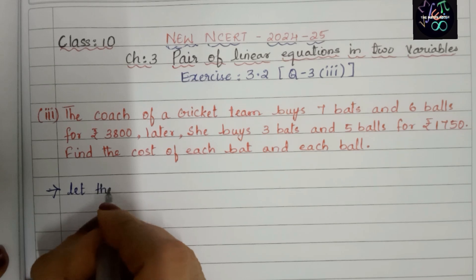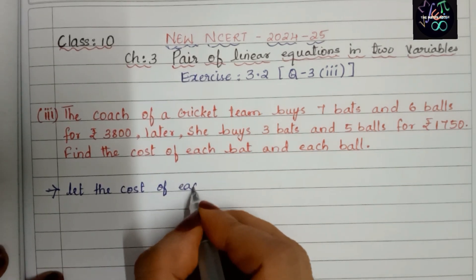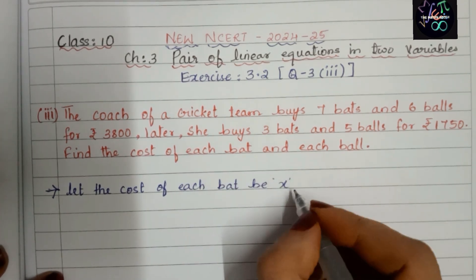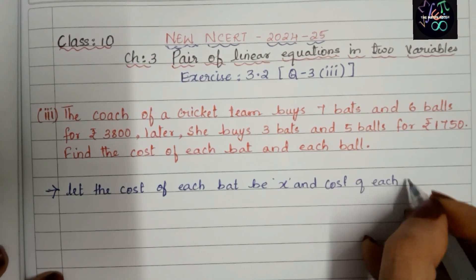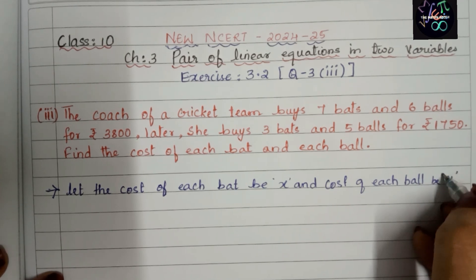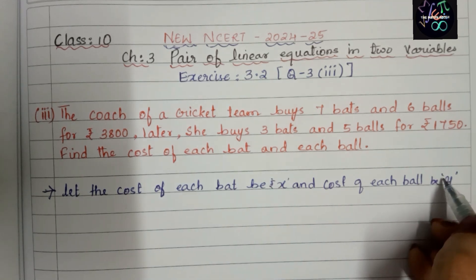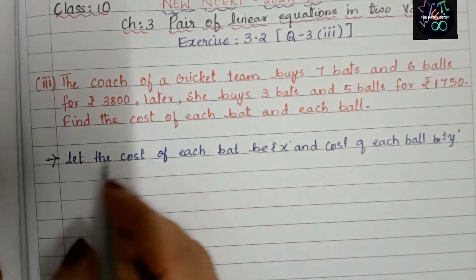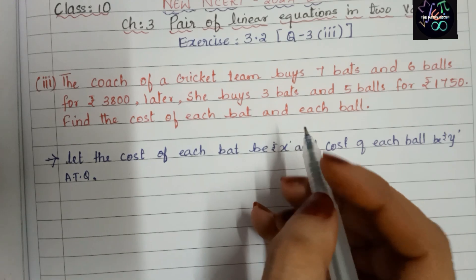Let the cost of each bat be x and the cost of each ball be y. So we have: cost of bat = rupees x, and cost of ball = rupees y. Now let us solve. According to the question, we have two cases.